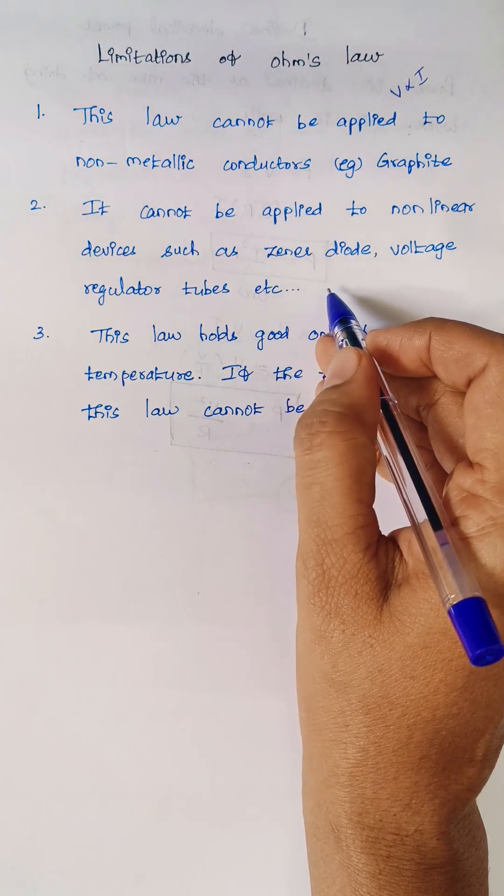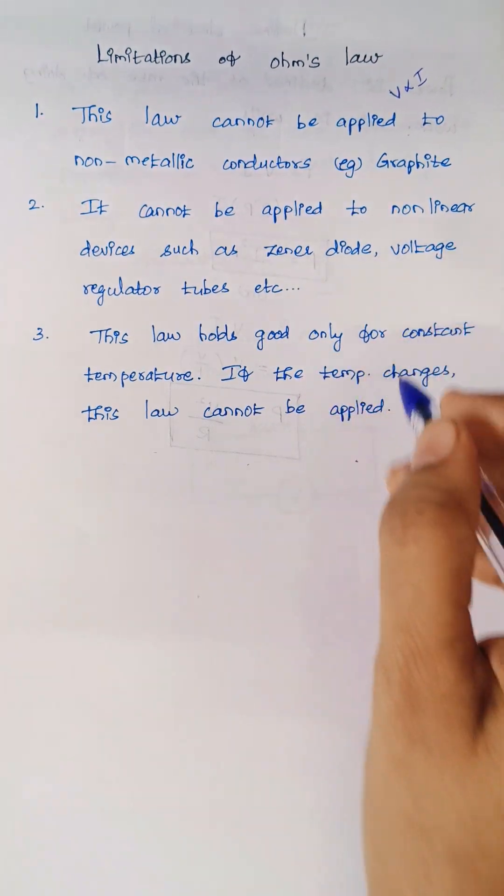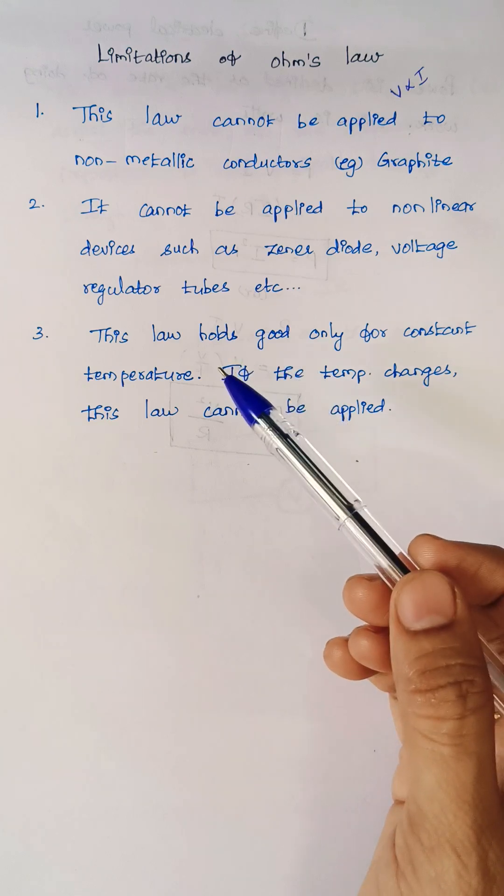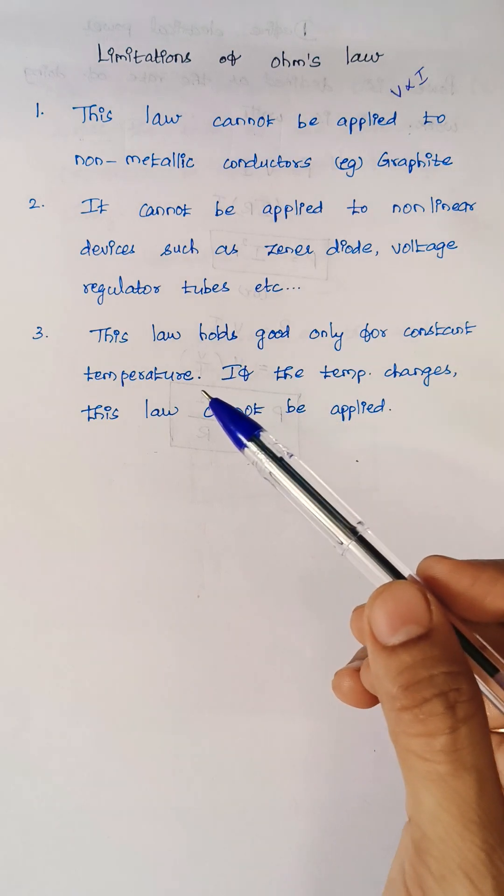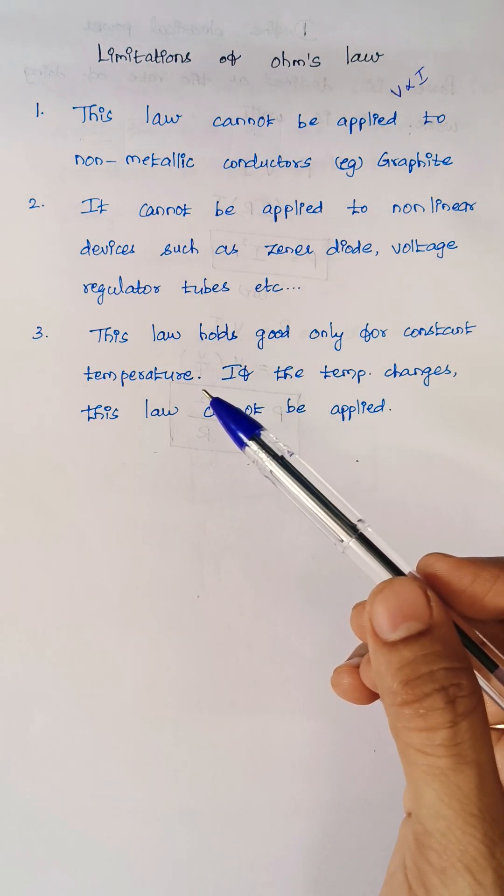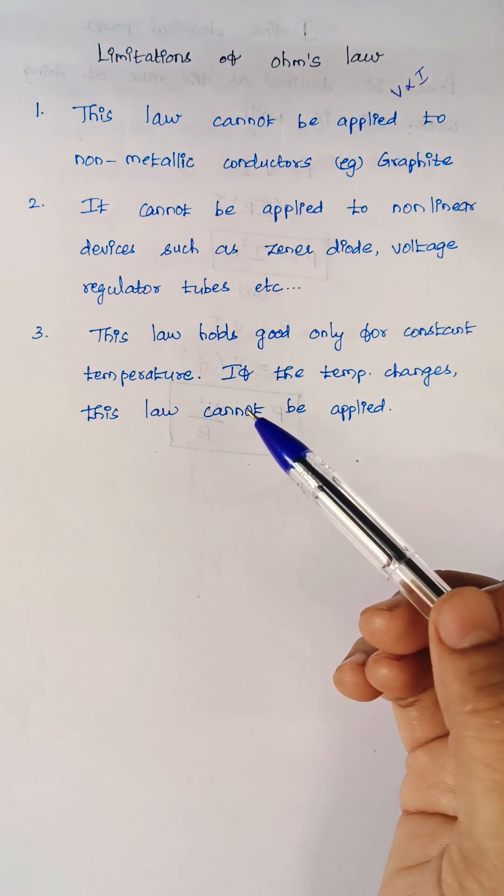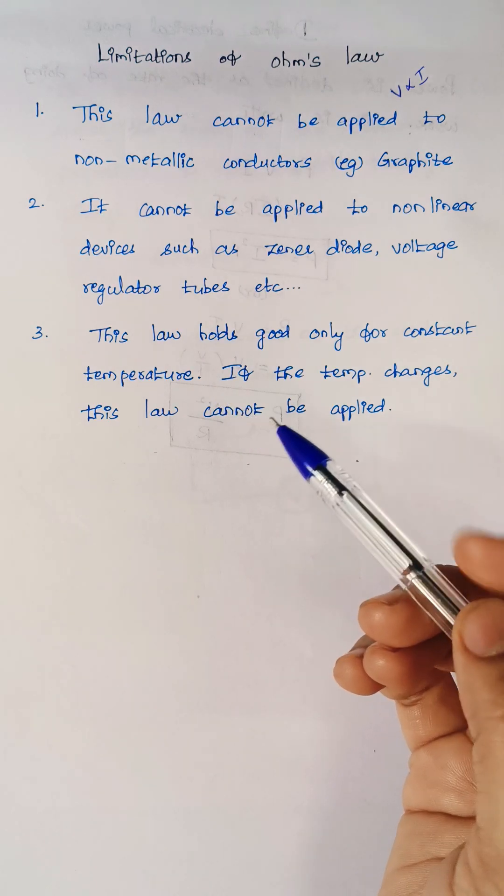Examples are zener diodes and voltage regulator tubes. The next thing is this law holds good only at constant temperature. Regarding Ohm's law, constant temperature is an important factor. If the temperature changes, then Ohm's law won't hold good. So these are the limitations.